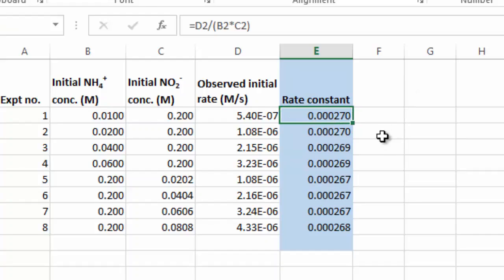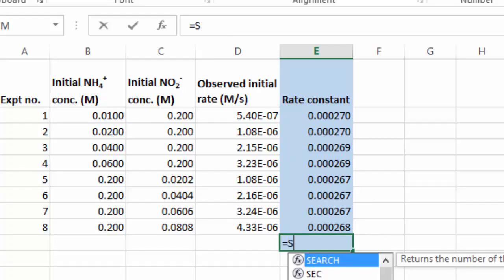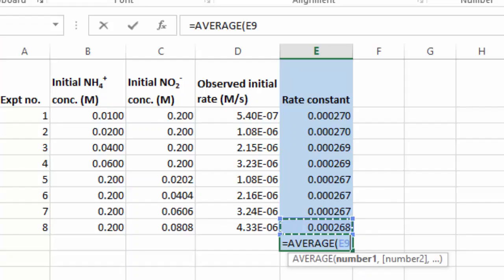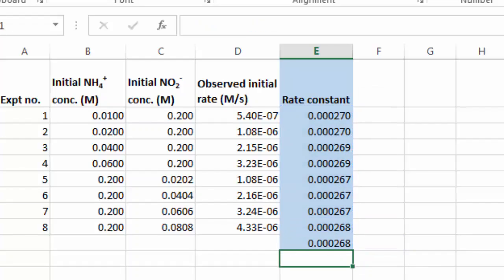Now, you would expect a certain amount of variance. You can see they're not all exactly the same because these are genuine experiments. So you're going to expect a certain amount of experimental scatter. But if we take the average of all those rate constant values, then that gives us a plausible value for the true rate constant. That's giving us 2.68 times 10 to the minus 4.